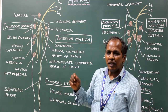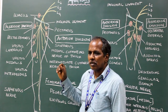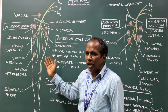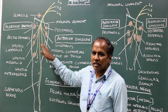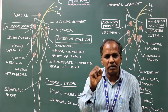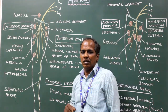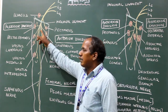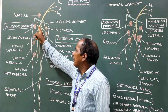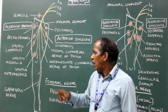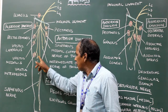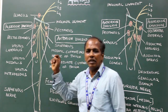The posterior division gives muscular branches to rectus femoris, vastus medialis, vastus lateralis, vastus intermedius, and also gives muscular branches to articularis genu. The muscular branch to rectus femoris sends an articular branch to the hip joint, and the muscular branch to vastus intermedius sends an articular branch to the knee joint.